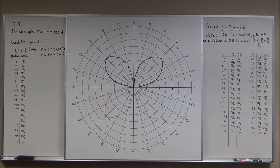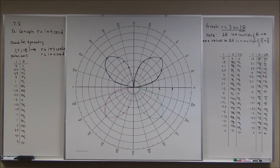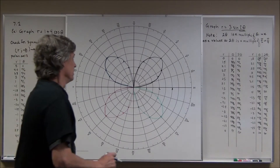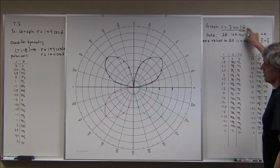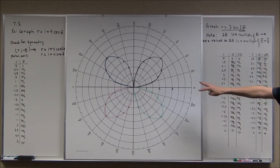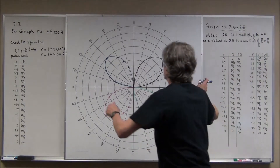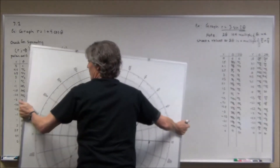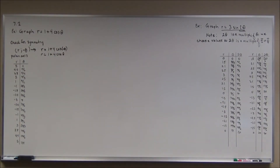That looks like something you might draw with a spirograph. The colors don't have to be different — it's probably best to do it all in pencil so you can see the whole graph. All these extra points were needed because of the multiple of the angle θ in the argument of the trig function. This is actually called a four-petal rose.